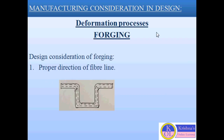The second manufacturing process is the deformation process. Deformation processes are defined as when the metal is plastically deformed into a desired shape, either in hot or cold condition. Forging is one of the deformation processes. In forging, the metal is plastically deformed into a desired shape, and these forging components are generally used in automobiles and aircrafts, like connecting rod, automobile structure, aircraft structure, valve and valve bodies, etc.